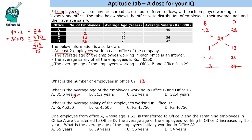What is the average salary of employees working in office B? We will use the grand total salary. Working in thousands, the average salary is 40.25 and there are 54 employees total, so 40.25 × 54: 40 × 54 = 2160 and 0.25 × 54 = 13.5, giving a grand total of 2173.5 thousand.